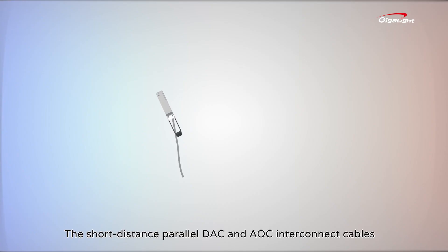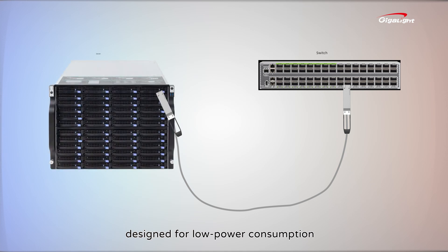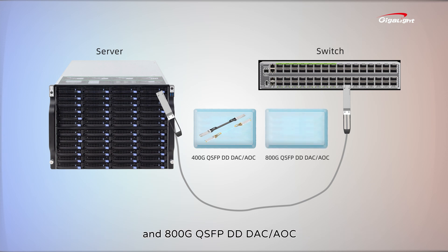The short distance parallel DAC and AOC interconnect cables are designed for low power consumption, such as 400G QSFP-DD DAC/AOC and 800G QSFP-DD DAC/AOC.